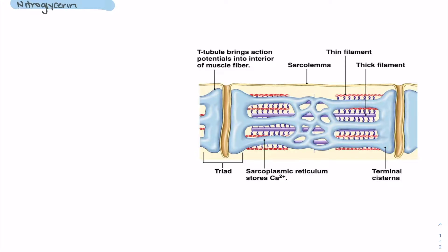When we look at the mechanism of action of nitroglycerin, we're really talking about the mechanism of action of nitrous oxide. As nitroglycerin enters the body, it's very quickly converted into nitrous oxide, which will have the activating effects that lead to the pathways that ultimately cause vascular relaxation. As nitrous oxide concentration increases in the body, we start to see activation of an enzyme called guanylyl cyclase.